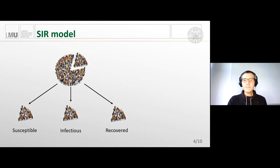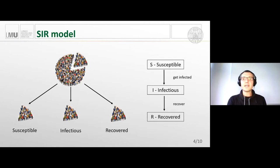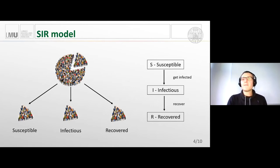This gives rise to a state diagram. We have three states — S, I, and R: susceptible, infectious, and recovered — with transitions between them. If you get infected you move from state S to state I, and when you recover you move to state R. Each state has some number of people in it, which is the value we want to track.